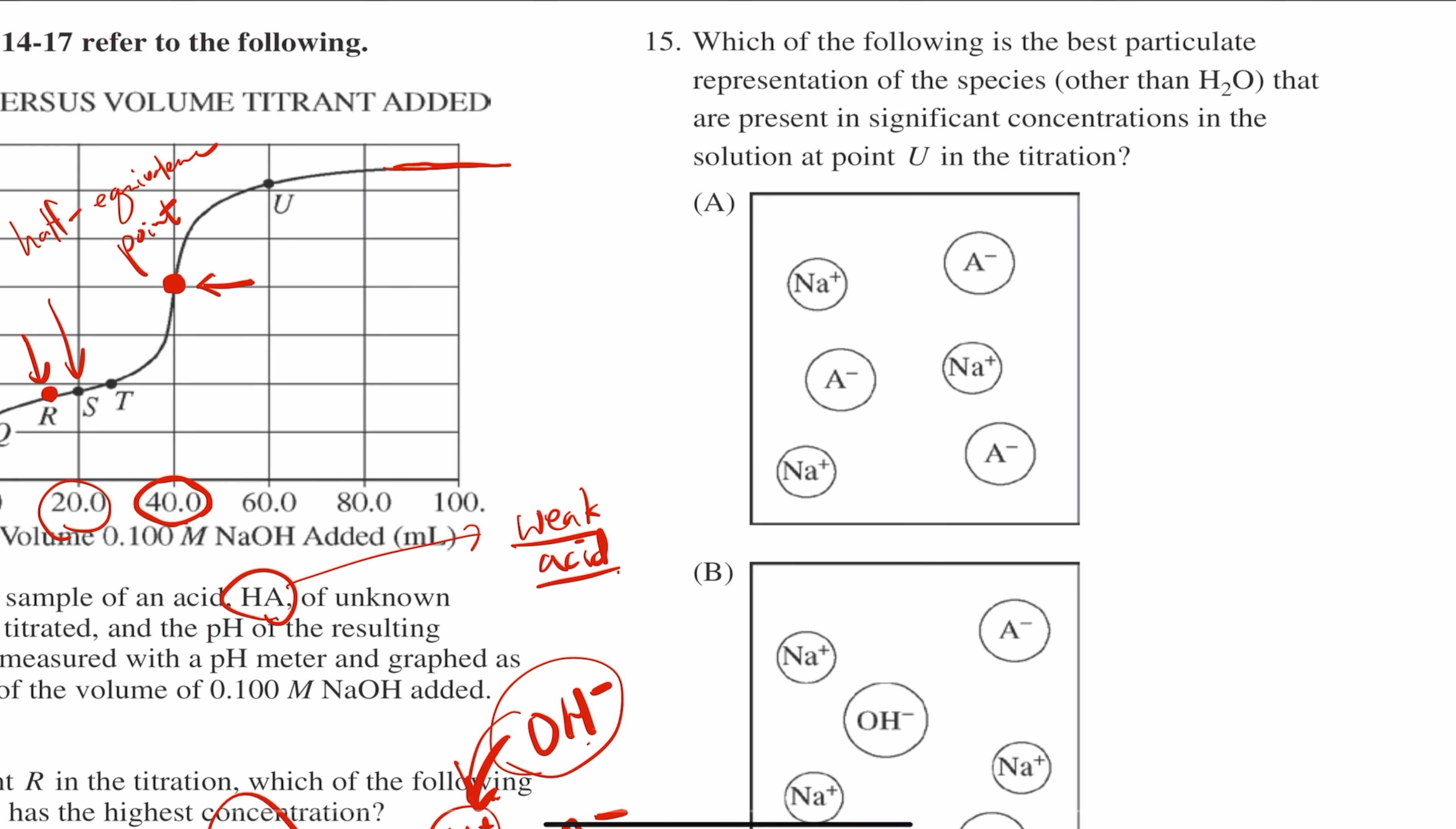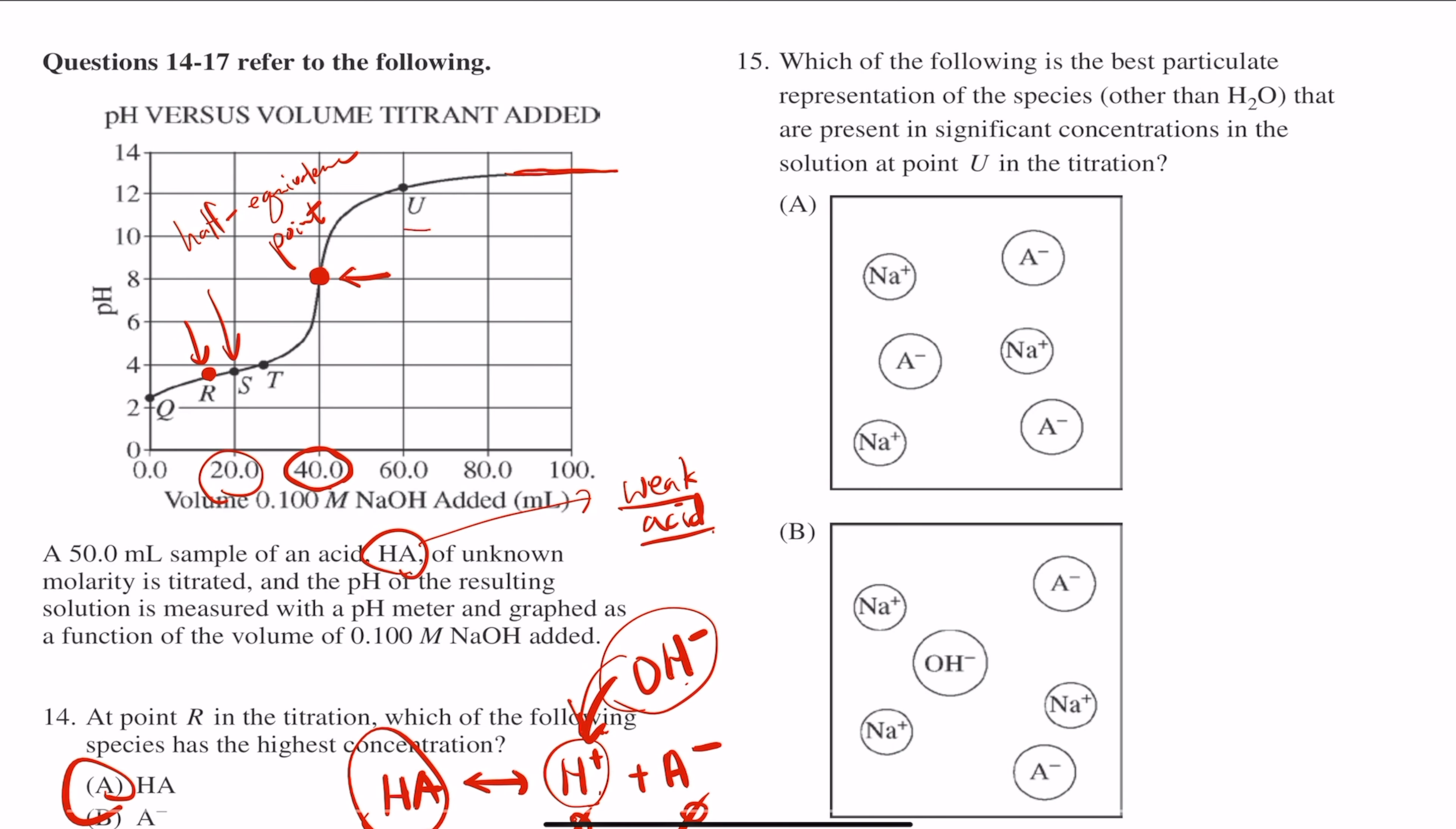Let's keep going. Number 15. Which of the following is the best particular representation of the species other than water that are present in significant concentration in the solution at point U in the titration?